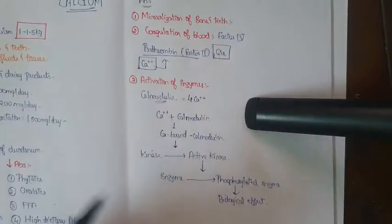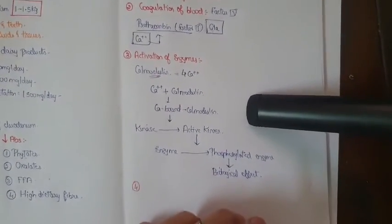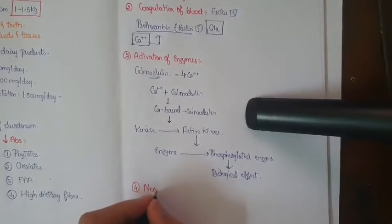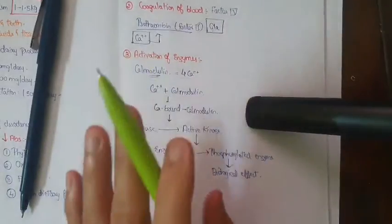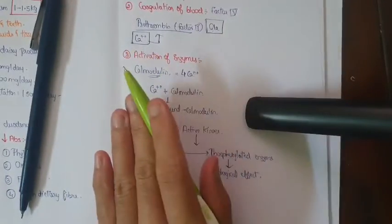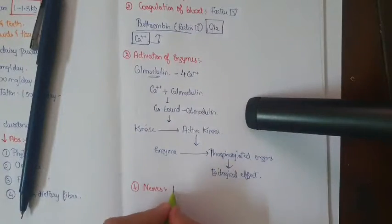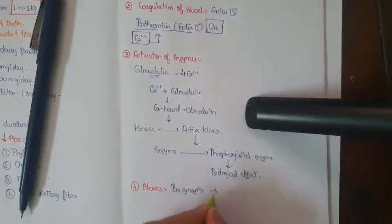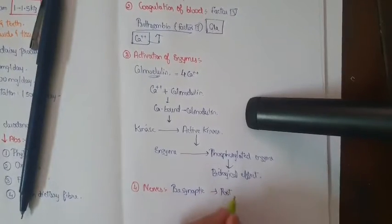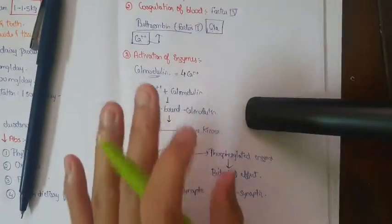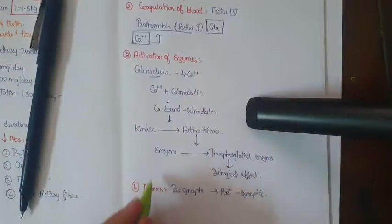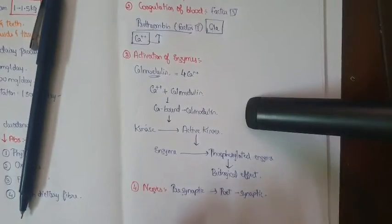Apart from that, we can also include nerves. In nerve, calcium is necessary for the transmission of the nerve impulses from the presynaptic to postsynaptic.